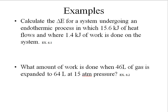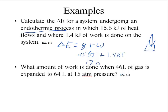Calculate the change in energy for a system undergoing an endothermic process in which 15.6 kilojoules of heat flows, and where 1.4 kilojoules of work is done on the system. Well, I'm going to write out that equation that I've got, and that happens to be the change in energy equals the heat energy plus the work. Well, what's my heat energy? It's endothermic. So what's the sign for 15.6 kilojoules? Hopefully you're going to say it's positive. Plus, 1.4 kilojoules of work is done on the system. In other words, here's my system. Work is done on it. So what does that make the sign for W? It also makes it positive. So it's basically 15.6 plus 1.4 kilojoules, and that gives me a value of 17 kilojoules of energy. Not too bad.